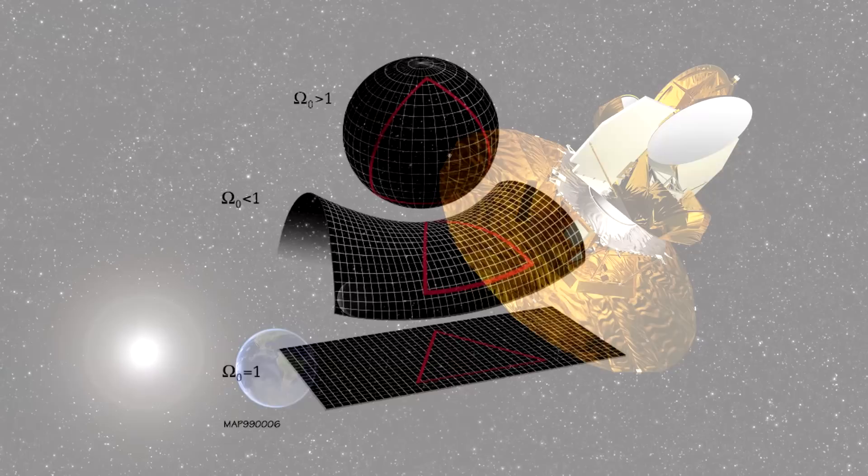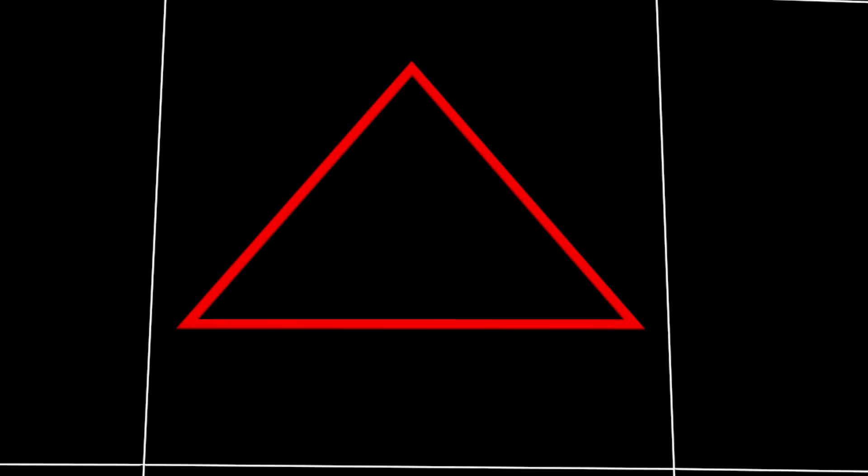Data from the WMAP, as well as Planck spacecraft, however, indicates that the universe is flat, or nearly flat, with an error of about 0.4%. A flat universe would be an infinite universe.